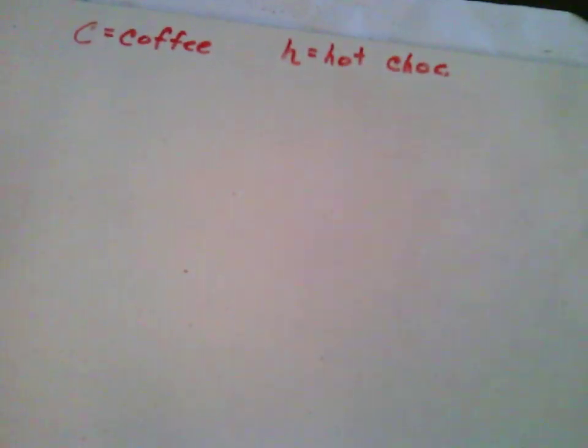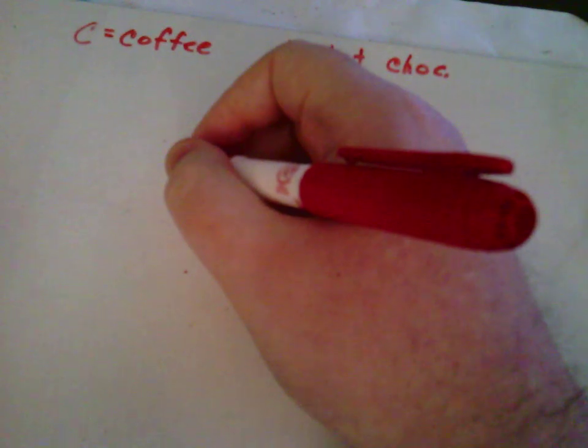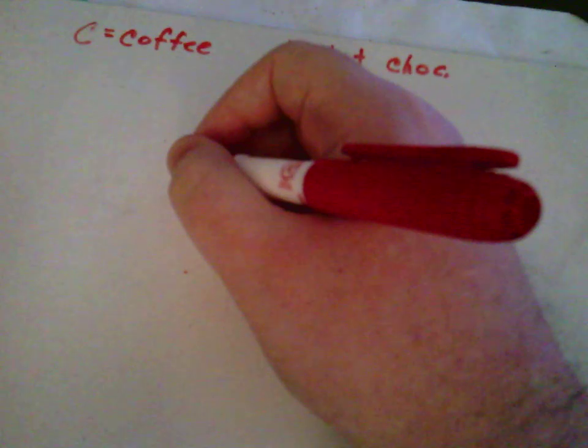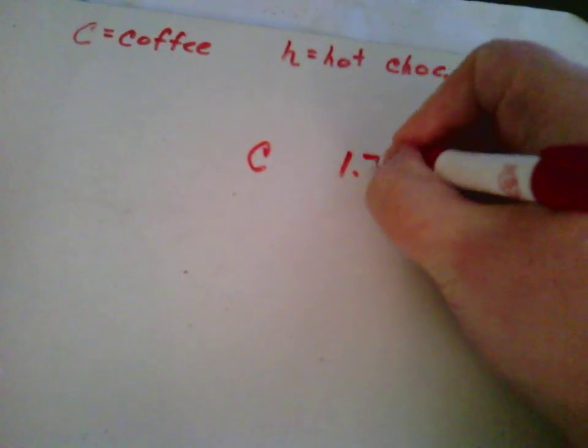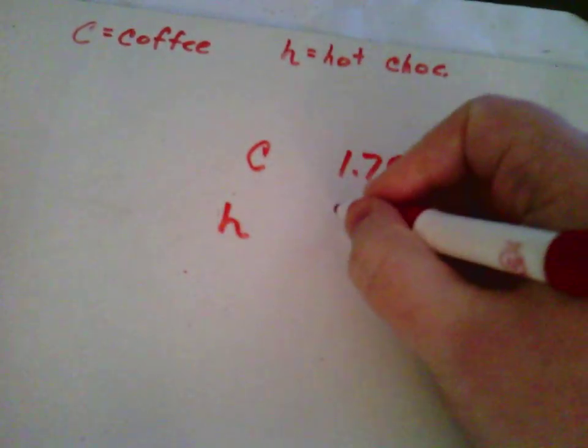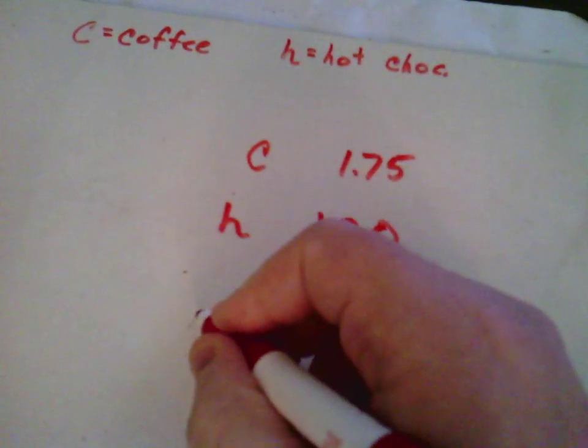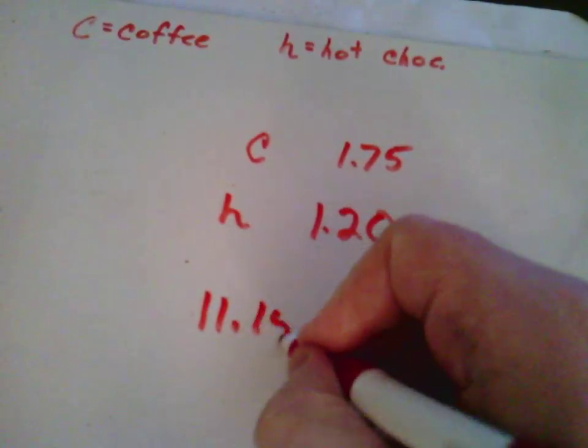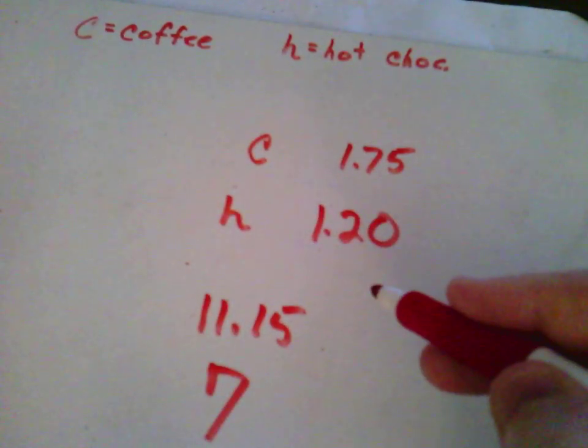Let's see if I can get this to work right. Very good. Next, let's reread the problem. Let's find the important information and exactly what it means. Each cup of coffee costs $1.75. So, cost of coffee is $1.75. Each cup of hot chocolate is $1.20. He paid a total of $11.15 for seven cups. That's all the information from the problem.